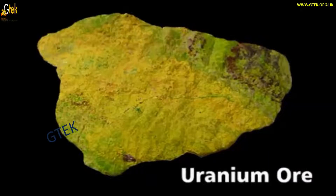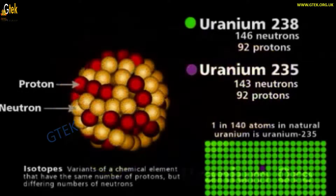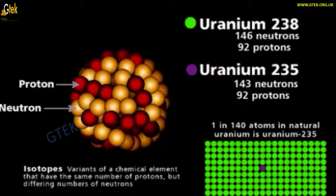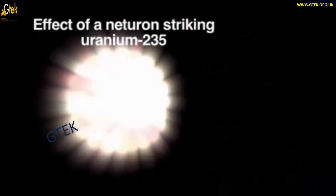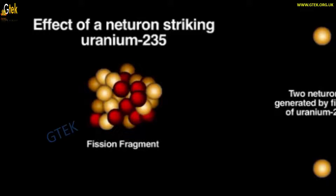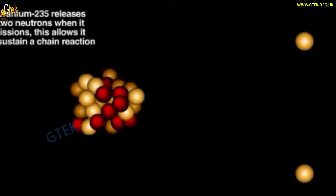Uranium core can be classified: uranium-238 consists of 146 neutrons and 92 protons. One in 140 atoms in natural uranium is uranium-235. Now let us see about the effects of a neutron striking uranium-235. Taking a fission fragment, 2 neutrons are generated by the process of fission. Uranium-235 releases 2 neutrons, and this process is called a chain reaction.